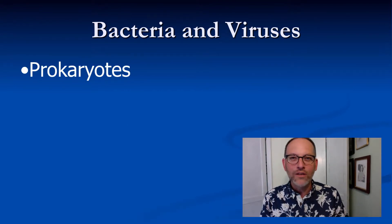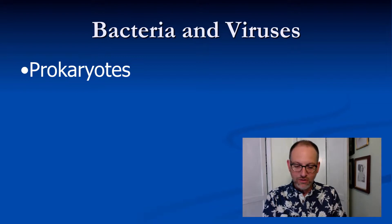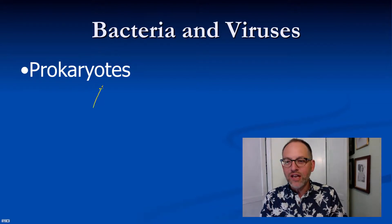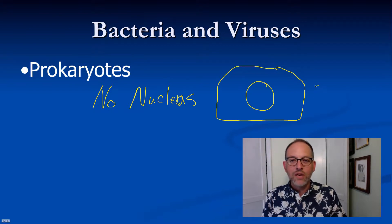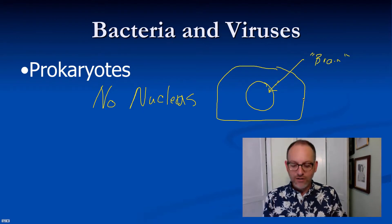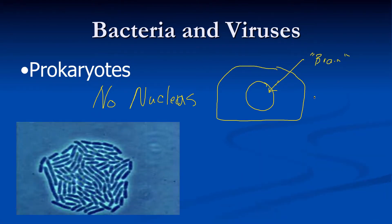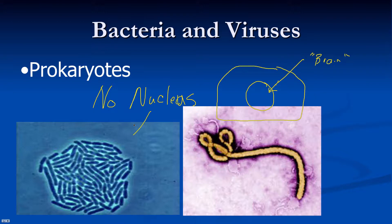Let's start out with how these are categorized. They are called prokaryotes because a prokaryote means they have no nucleus inside a cell. In our cells you will find a structure in the middle called a nucleus, which is often referred to as the brain of the cell. Bacteria and viruses do not have that. Here's a bacteria colony and here is an Ebola virus.